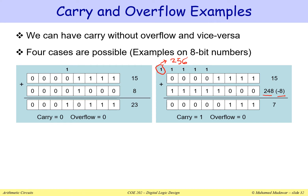Notice that the last two carries are identical — C7 and C8, the carry into the most significant bit and the carry out. If you XOR C7 with C8, you get 0, which is an indication that there is no overflow. So this is a clear example where we have a carry but there is no overflow.